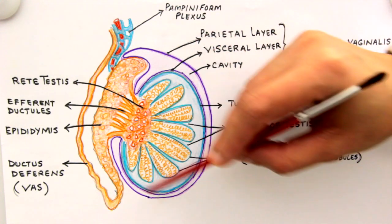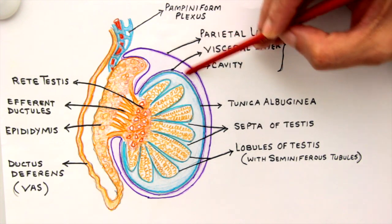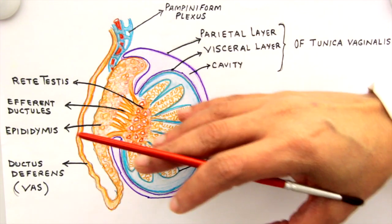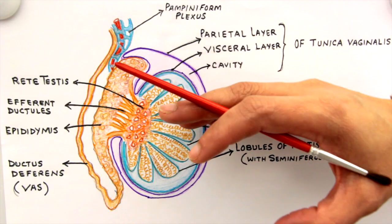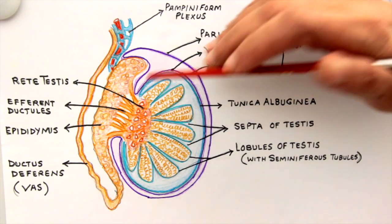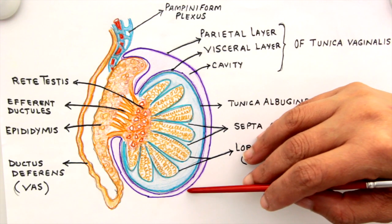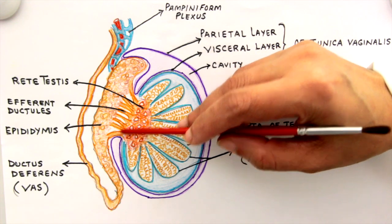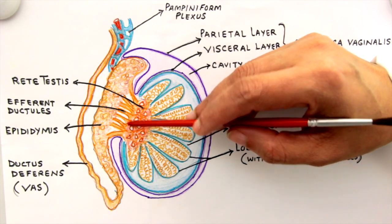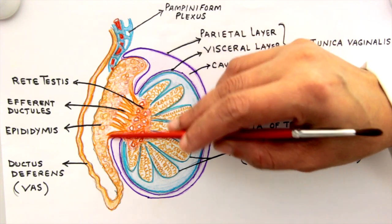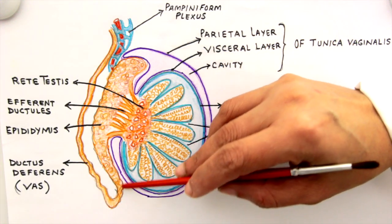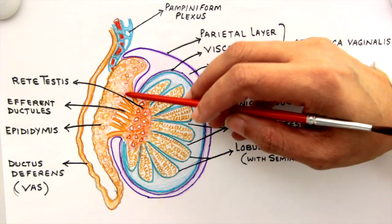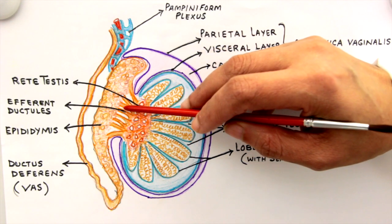The tunica vaginalis covers the testes on all surfaces — the anterior, medial, and lateral surfaces — except for the region at the back, the posterior surface, where the testis is joined by the epididymis and the ductus deferens or spermatic cord. This posterior region is not covered by the tunica vaginalis.